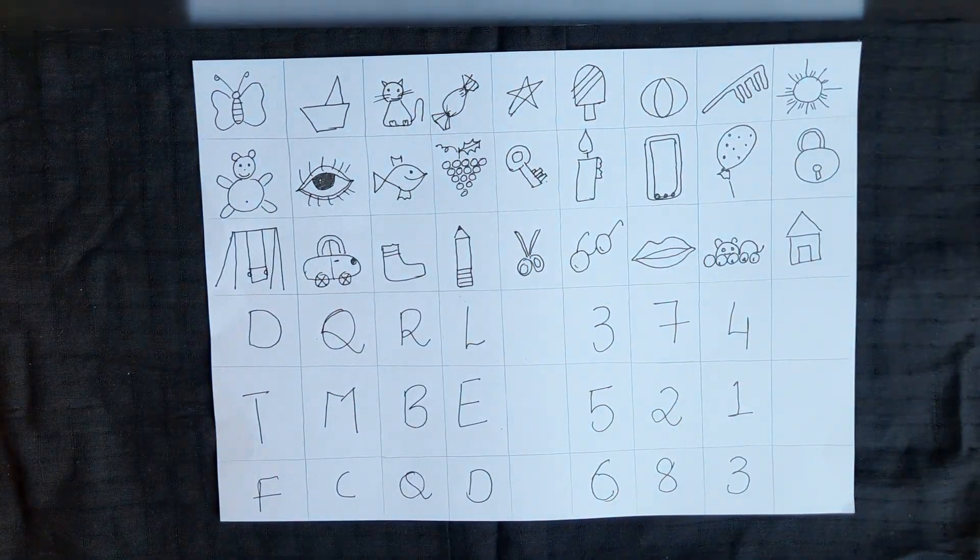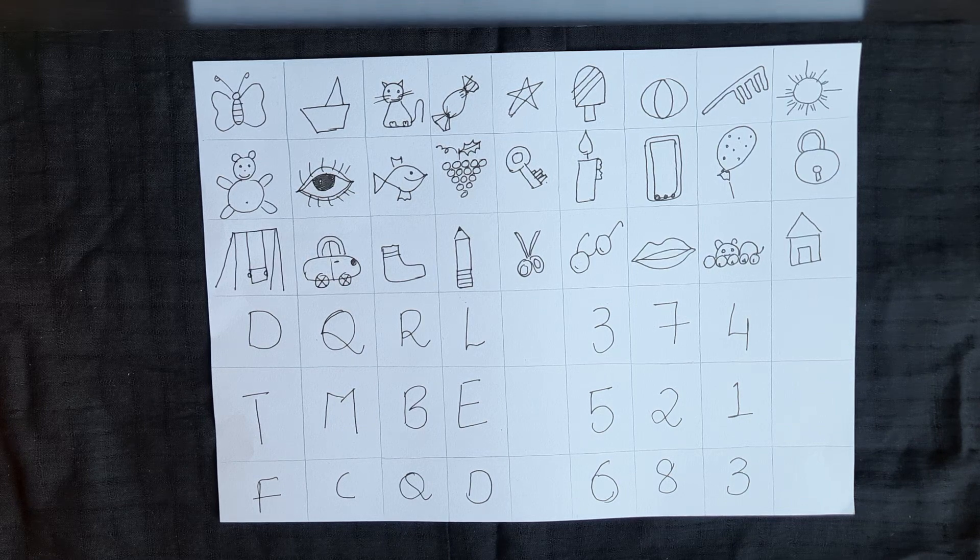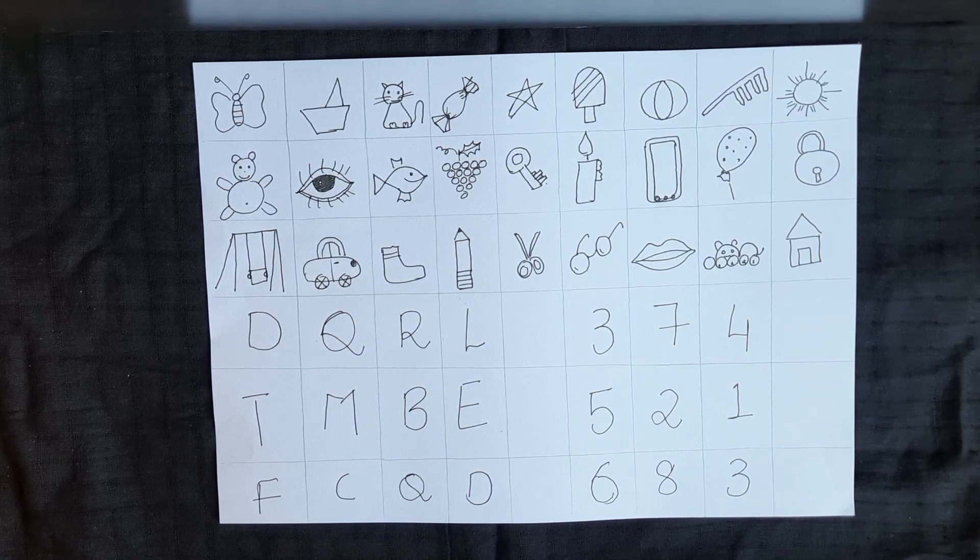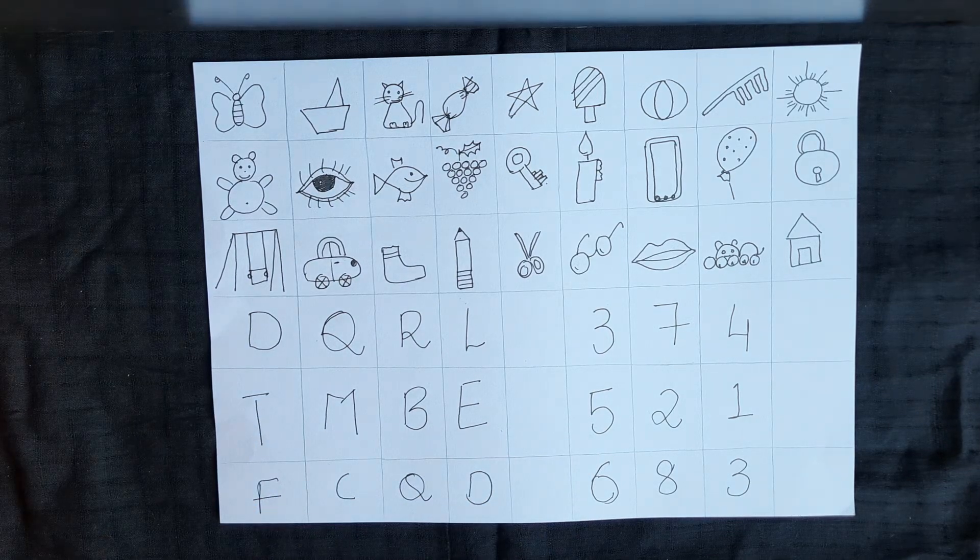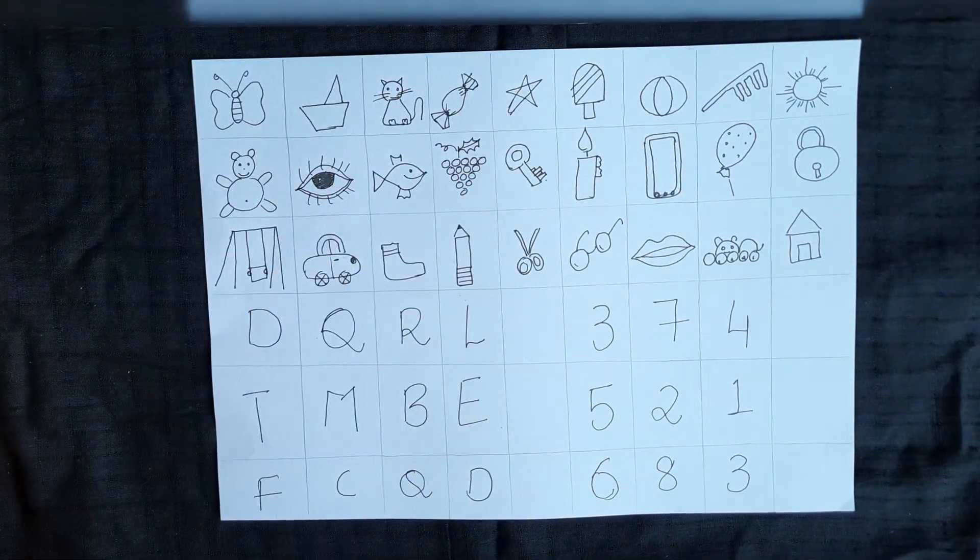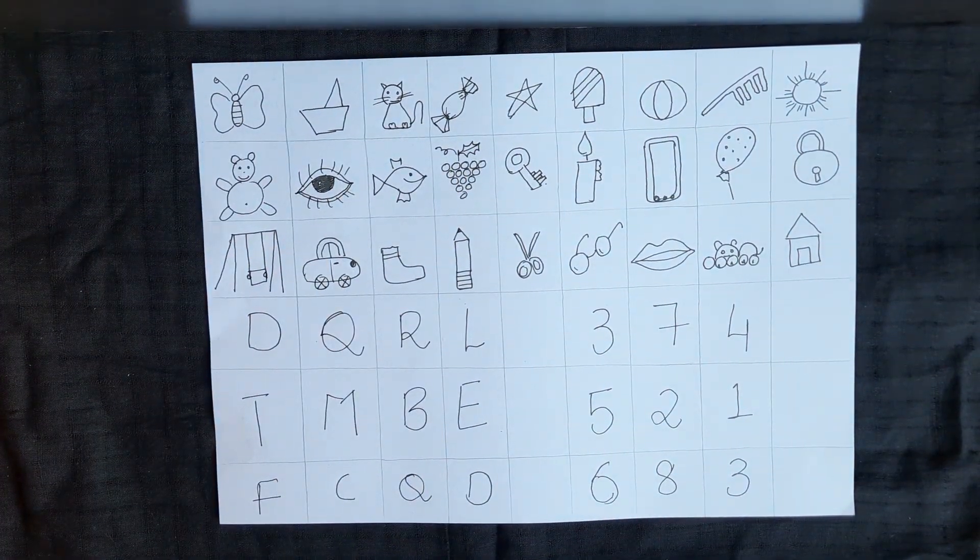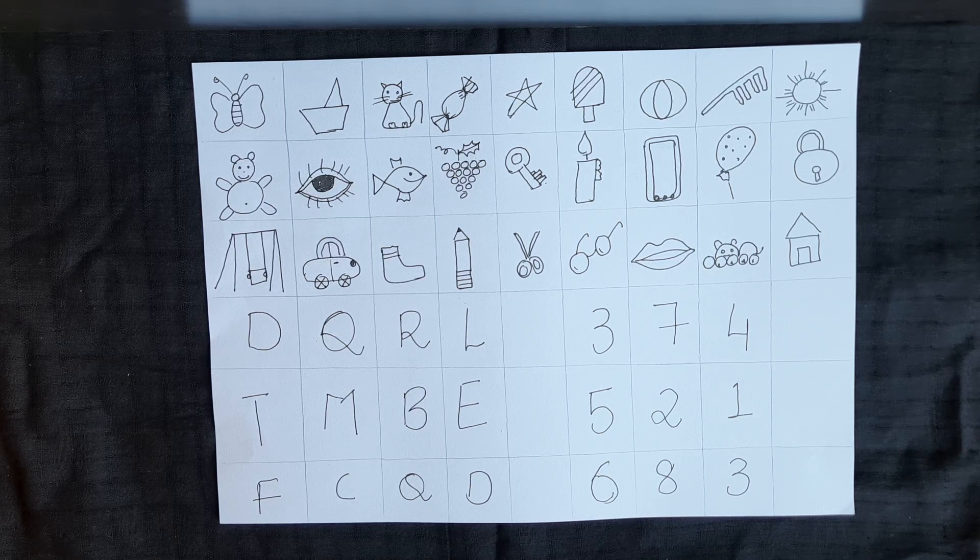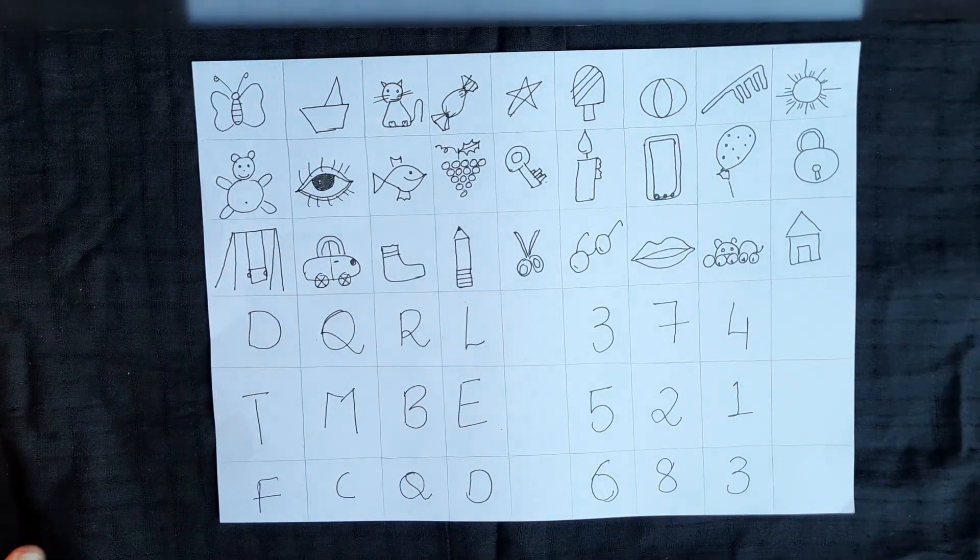The third game that we can play is pointing. Whichever is a picture or the number you say, the child has to point, or you can use blocks or beads or bangles and the child has to keep it on that picture.